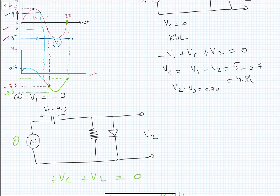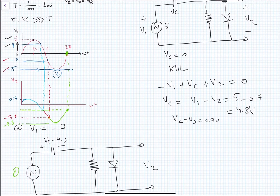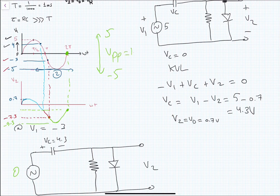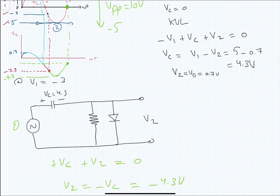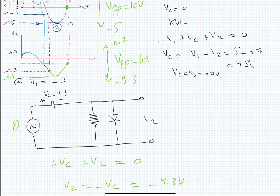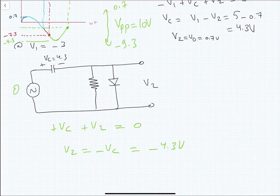Now we can deduce that the input peak-to-peak voltage varies from +5 to −5, so it is 10 volts. The output signal varies from +0.7 to −9.3 volts, so the peak-to-peak voltage stays 10 volts, but it is shifted downward because of the diode and capacitor in the circuit. Now we will apply this circuit on LTSpice in order to check the results and the output signal.